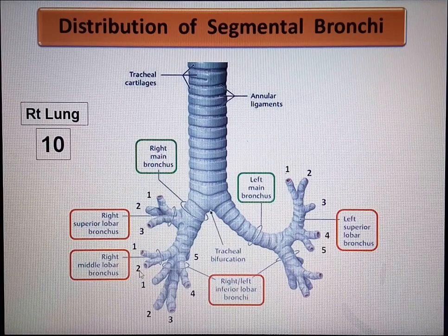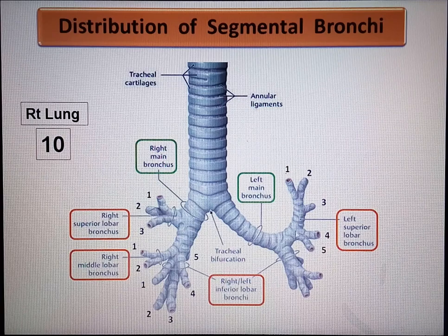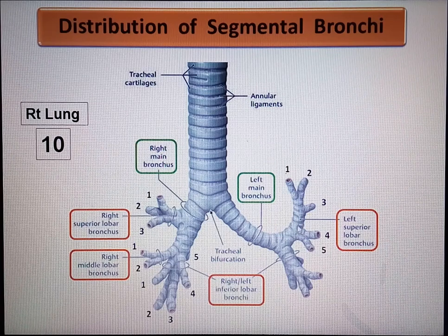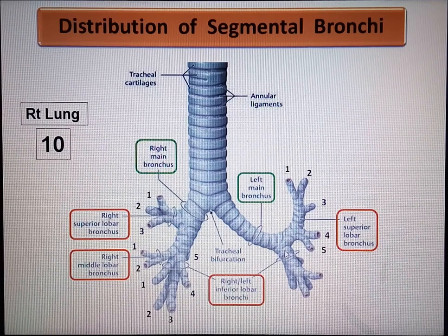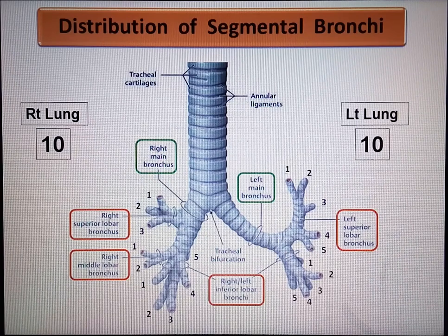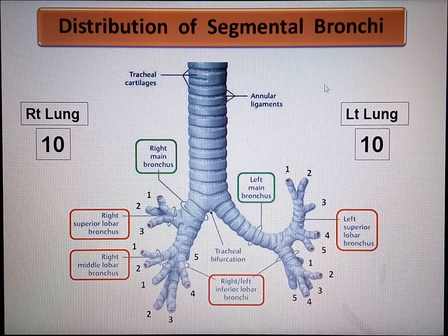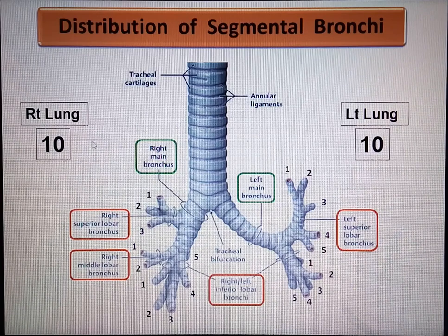On the left side, the upper lobar bronchus gives rise to five segmental bronchi. The upper lobar bronchus divides into an ascending branch and a descending branch: the ascending branch gives rise to three segmental bronchi, and the descending branch gives rise to two, which correspond with the segmental bronchi of the middle lobe of the right lung. The left lower lobar bronchus gives rise to five segmental bronchi, making ten segmental bronchi in the left lung — corresponding with the number of bronchopulmonary segments.